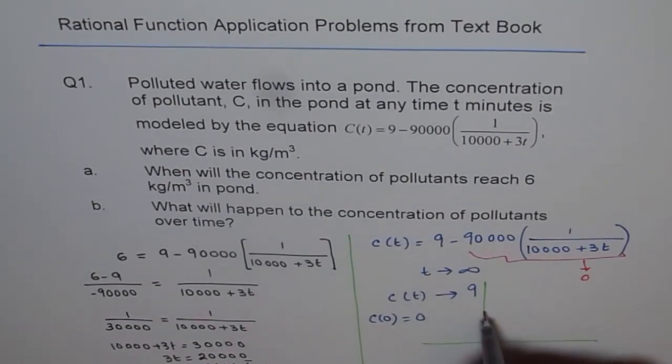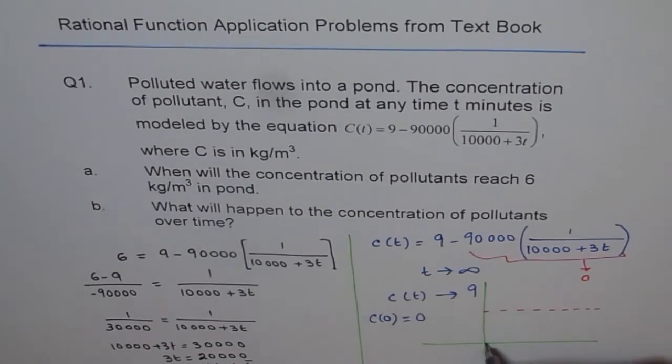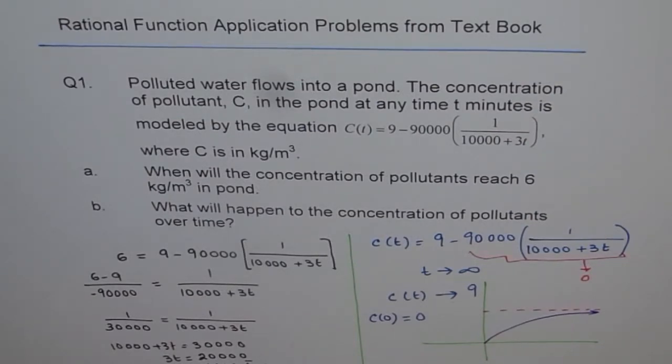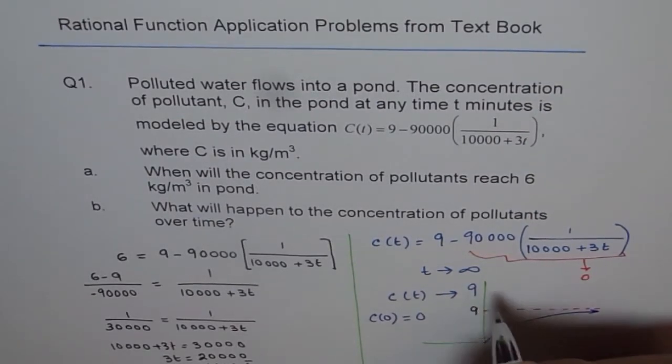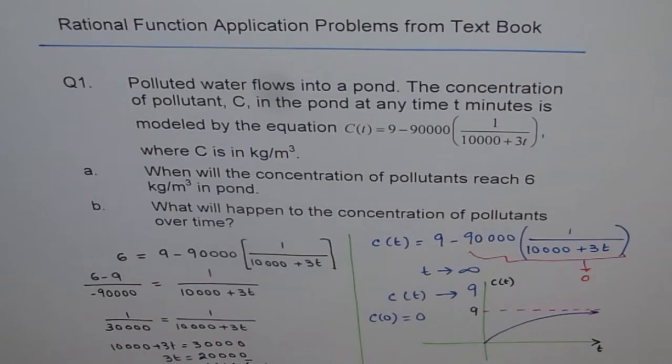So we say, well at the most it will reach the level of 9, where the graph will be kind of like this. So this value is 9 for us, where this is C(t) and this is time. So that is going to happen over a period of time. So have a good look at the solution.